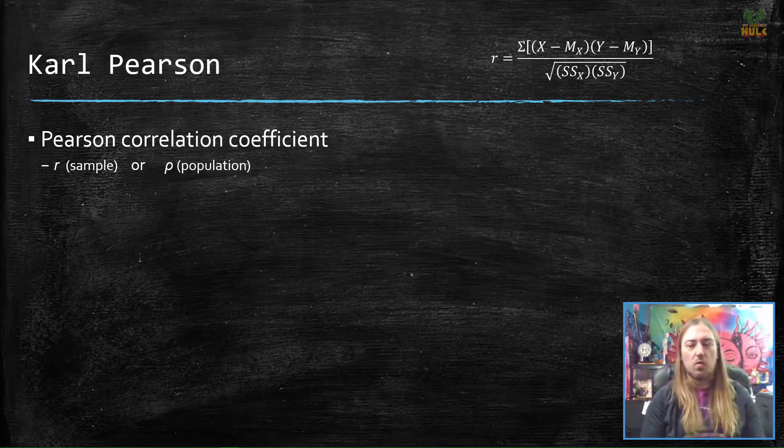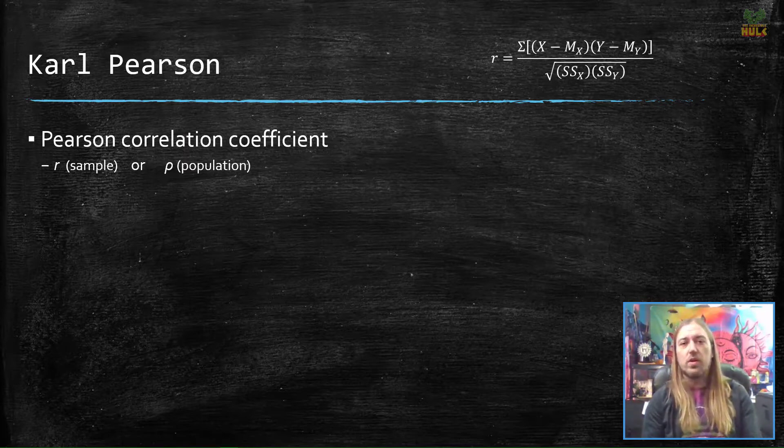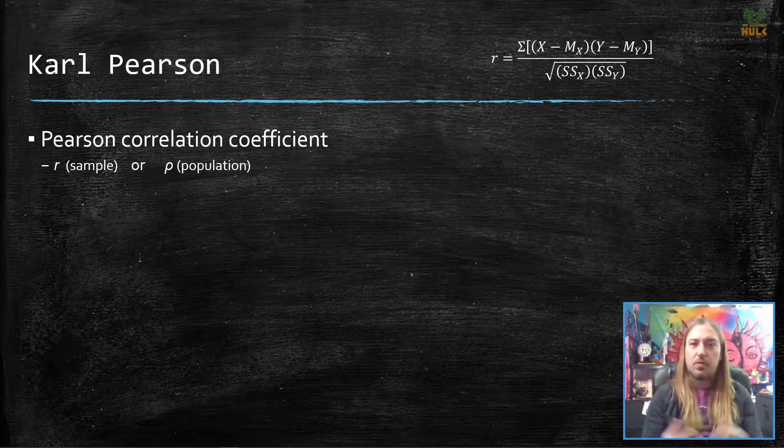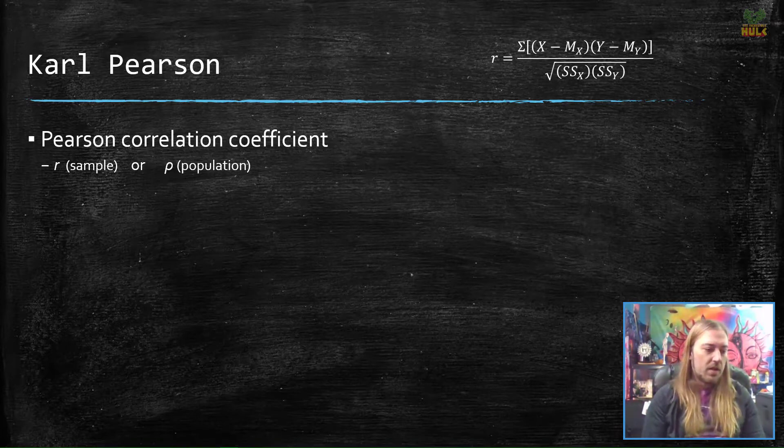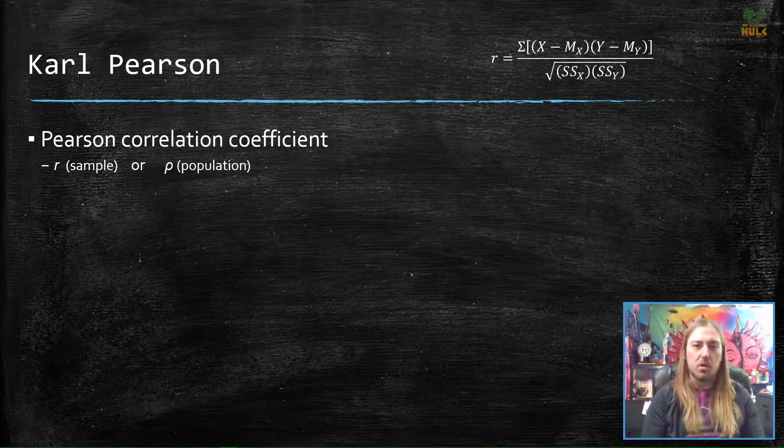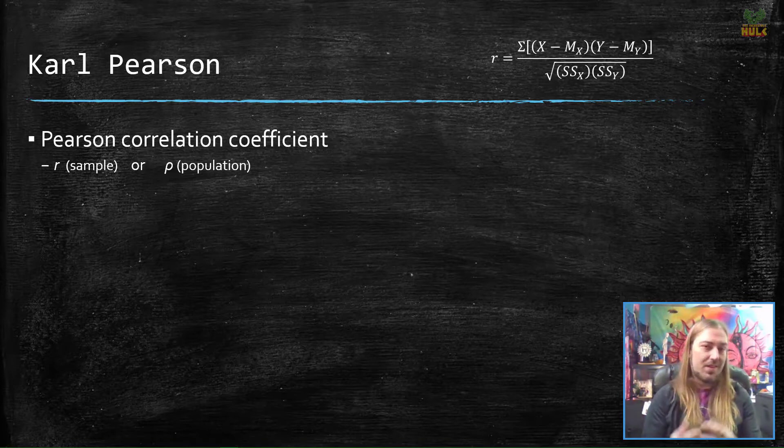Instead we're going to use r equals the sum of score minus the mean of those scores for the x variable, multiply those times the y minus the mean of the y variable, add all of those products together, and then divide by the square root of sum of squares x times sum of squares y. The reason why I like this formula is not because it looks more complicated, although it does, but because these are things you know. You've been doing already, in order to get standard deviation and variance. This formula really takes advantage of things that you already know how to do.